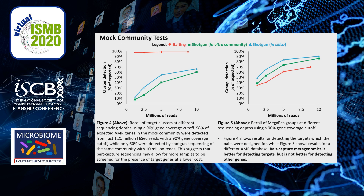On the left, in silico subsampling experiments show that recall of true positive targets remains high in the bait capture dataset even with a depth of 1.25 million reads, suggesting that bait capture sequencing may allow for more samples to be screened at a lower cost. However, there is a catch: the figure on the right shows results using an adapted version of the AMR++ pipeline, which uses a different database, and bait capture doesn't perform nearly as well for that database. So bait capture is great for detecting targets but not great for detecting other genes.